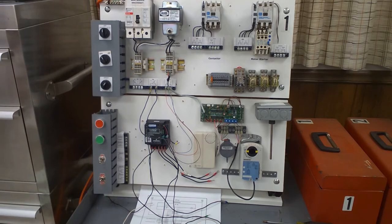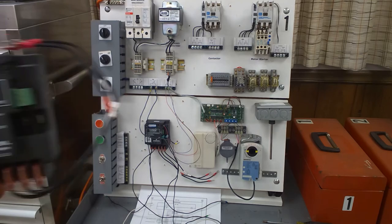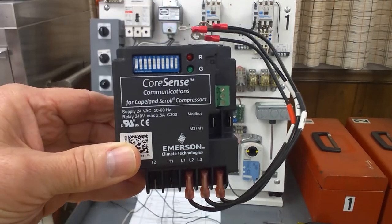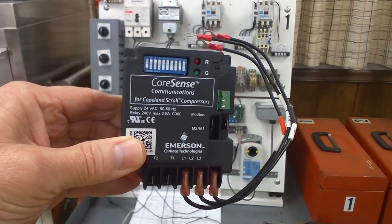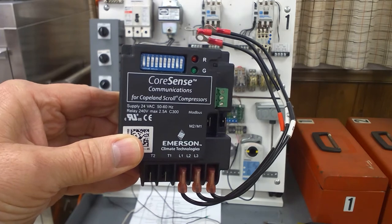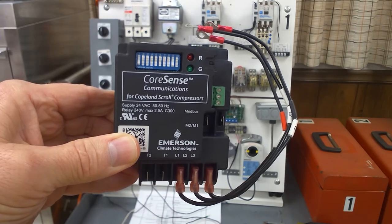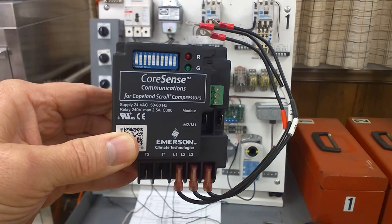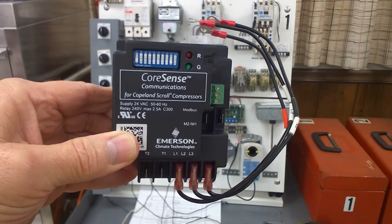This is the practical hands-on wiring that you would be doing if you were in school. Here is the CoreSense Copeland scroll compressor protector from track protection module, and you see just like the picture that we drew in the diagram.